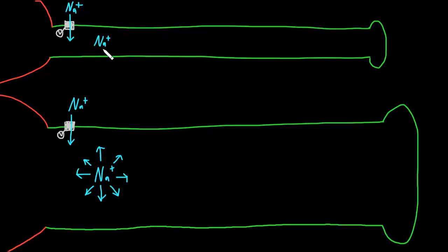And the same is going to be true for this sodium ion in the small diameter axon. It could go in an infinity of directions as well, just like in the larger diameter axon. But now let's consider the obstacles to this sodium ion moving down the axon.